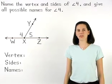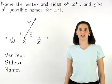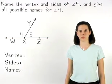In this problem, we're asked to name the vertex and sides of angle 4, then give all possible names for angle 4.